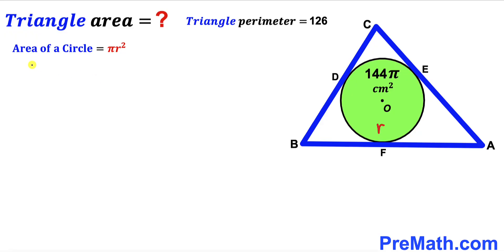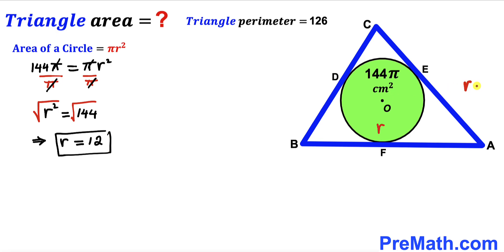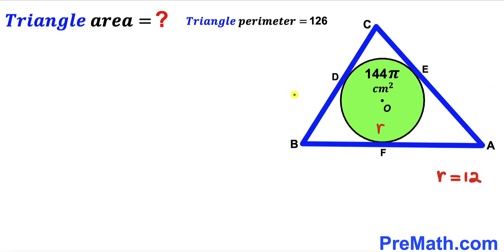Let's fill in the blanks in this formula: 144π = π × r². Dividing both sides by π, the π cancels on both sides, giving us r² = 144. Taking the square root of both sides, the radius lowercase r of this green shaded circle turns out to be 12 centimeter.